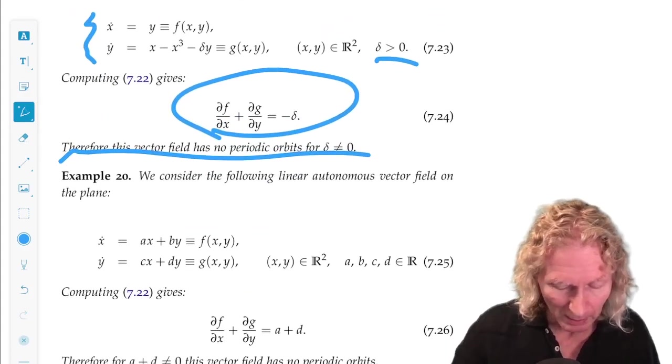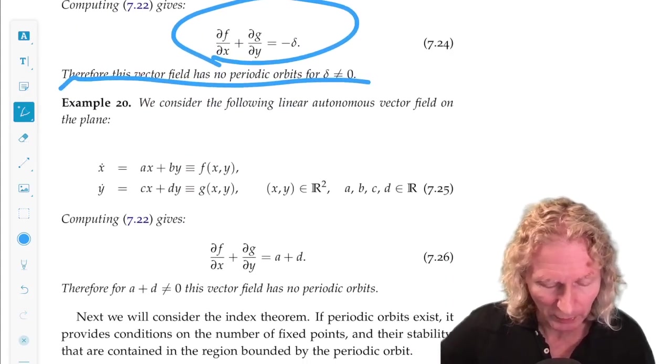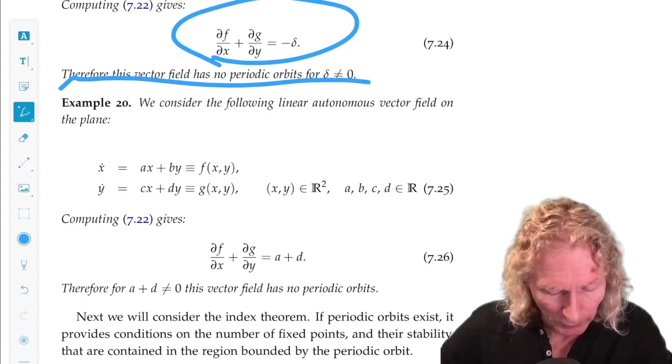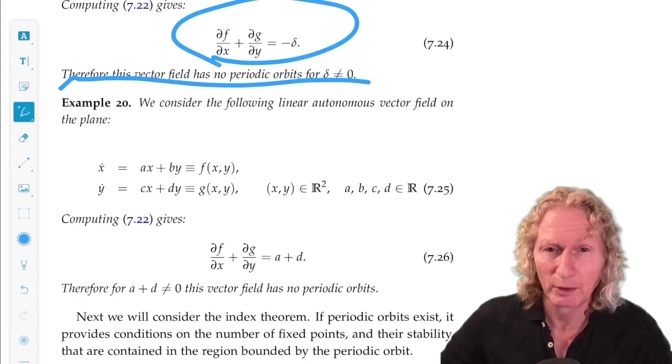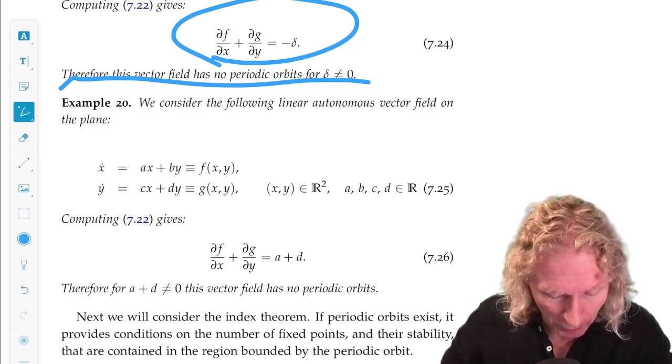Okay. Let's look at another example. X dot equals ax + by, Y dot is cx + dy. It's a linear vector field as an equilibrium point at the origin.